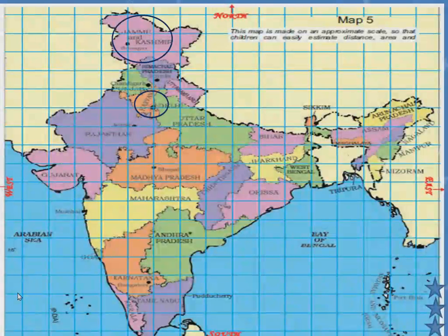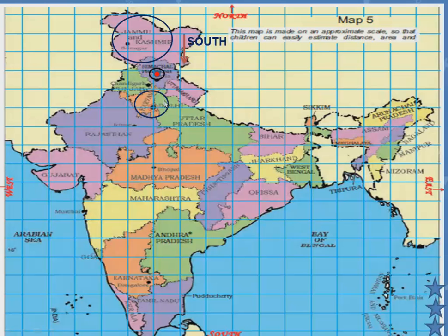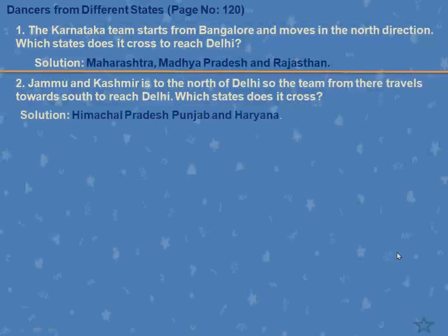We are talking about Delhi and Jammu and Kashmir. The Jammu and Kashmir team has to move downwards — southward — because Delhi is to the south of Jammu and Kashmir. The states it has to cross are Himachal Pradesh, Punjab, and Haryana to reach Delhi.